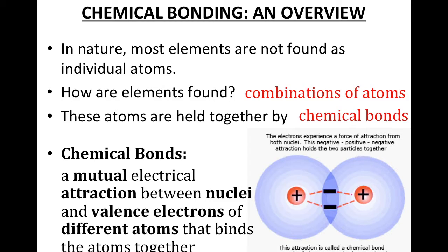By definition, chemical bonds are a mutual electrical attraction between the nuclei and valence electrons of different atoms that binds the atoms together. From previous science classes, you might know there are different ways the nuclei and valence electrons attract — ionic bonds, and covalent bonds where electrons are being shared. In ionic bonds they're being transferred, but it's still an attraction between the nuclei and valence electrons of different atoms. The electrons experience attraction due to the positive-negative attraction — opposite charges attract — pulling the atoms together into a chemical bond.